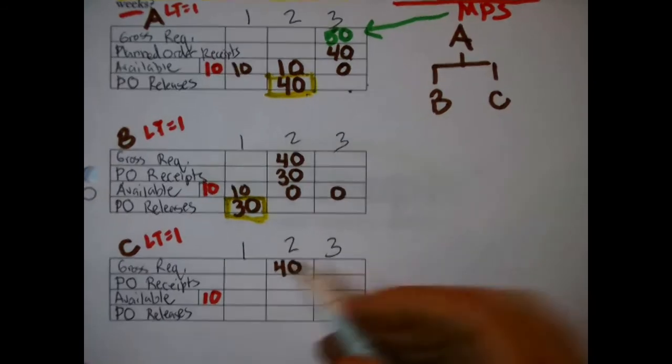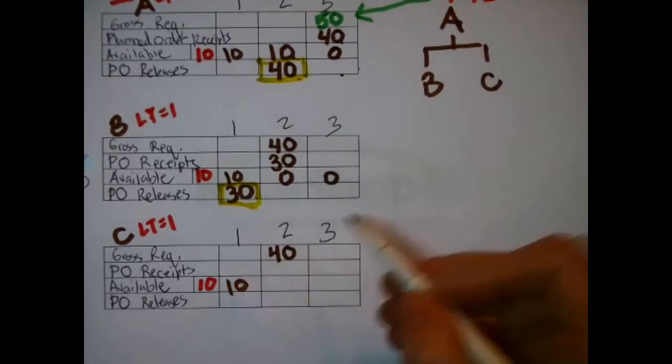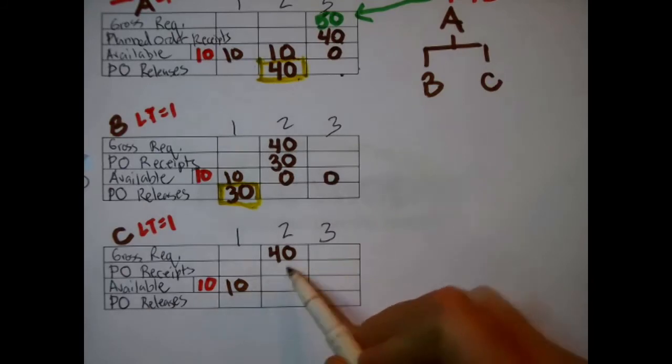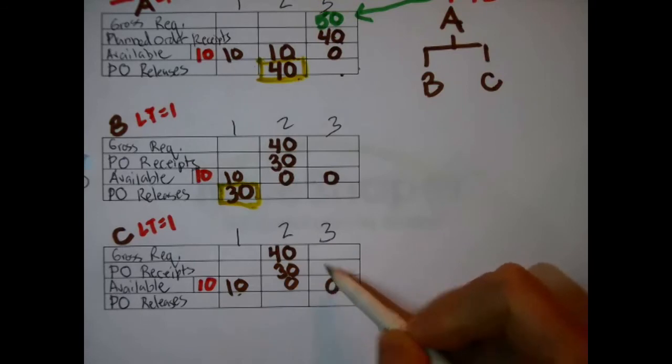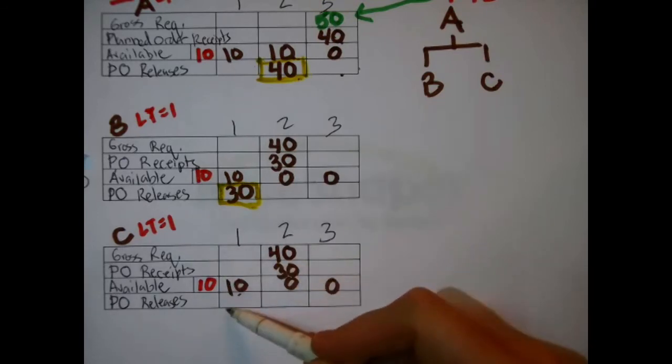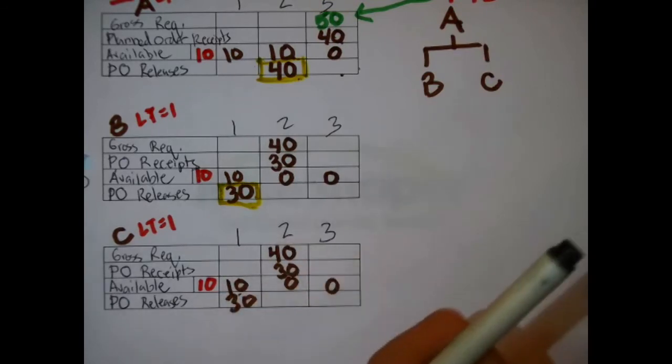With C, very similar. Matter of fact, almost identical. We have the ten, so we'll need another thirty to provide the forty, which is going to wipe out inventory. Same lead time, so thirty needs to be requested in the first week. There.